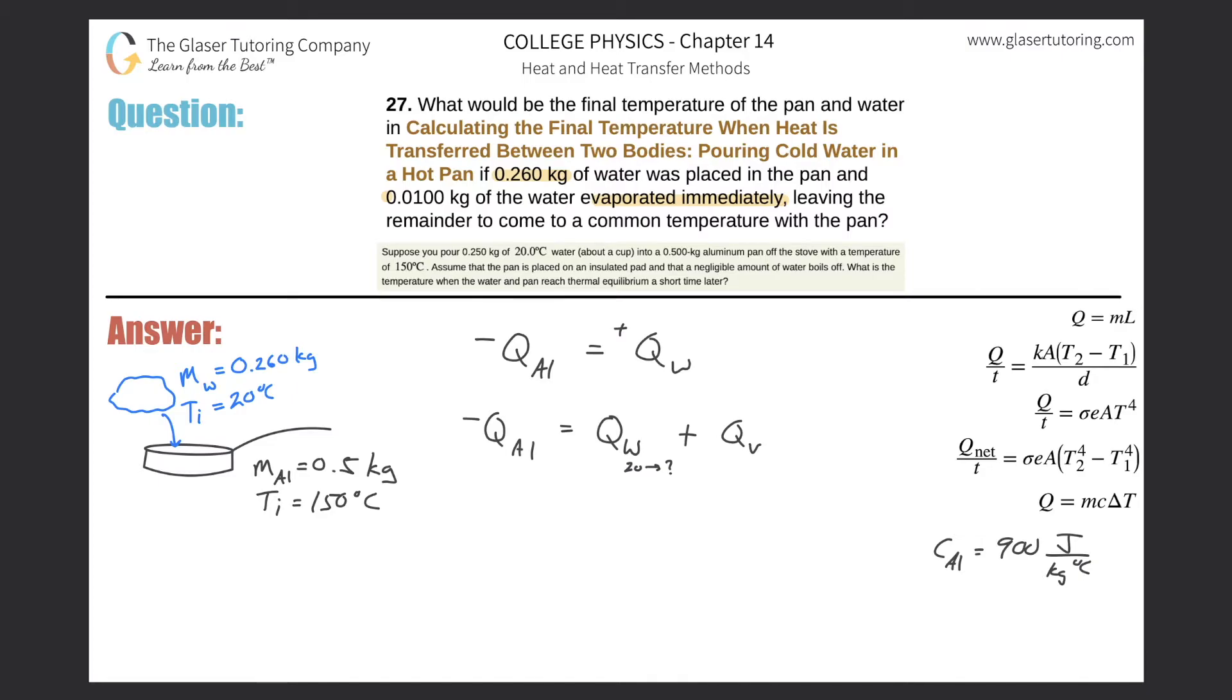Now I can expand everything I need. This is negative Q of the aluminum, so we need the mass of the aluminum, specific heat of the aluminum, times the change in temperature of the aluminum, which will equal the mass of the water multiplied by the specific heat of the water multiplied by the change in temperature of the water, plus the mass of the water that is evaporating multiplied by the heat of vaporization of water.